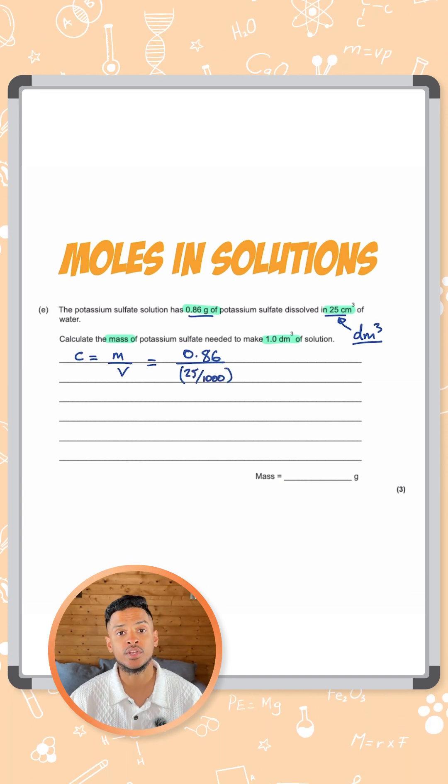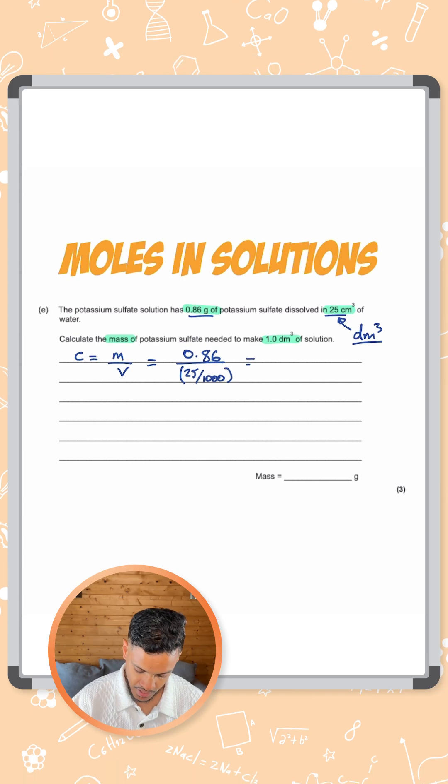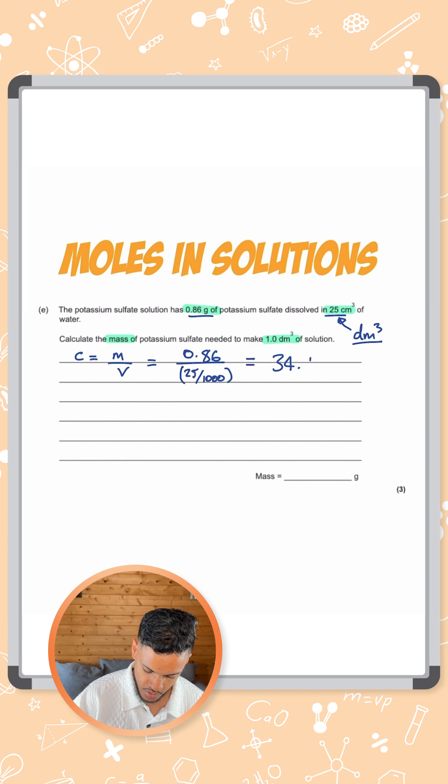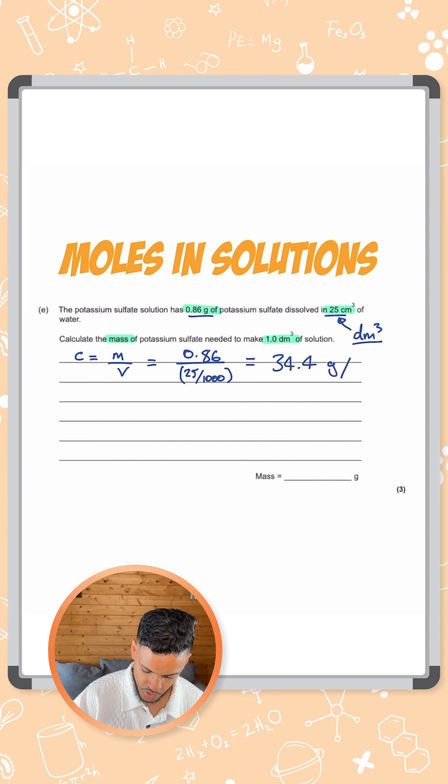Or in other words, 0.025. Now putting that into your calculator should give you the concentration as 34.4 grams per dm cubed.